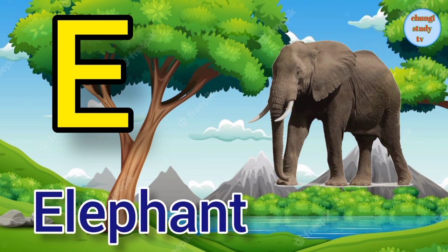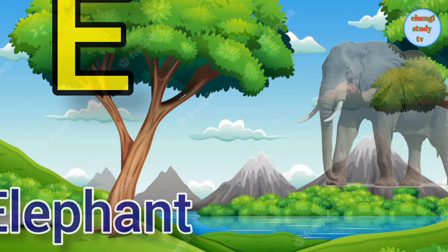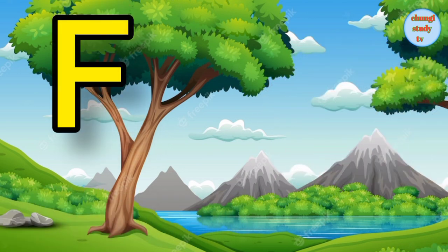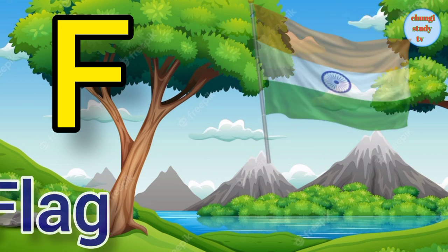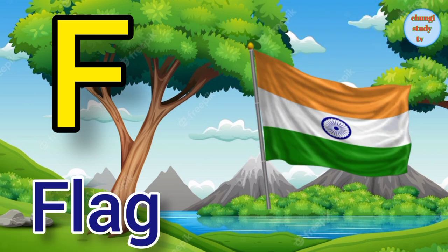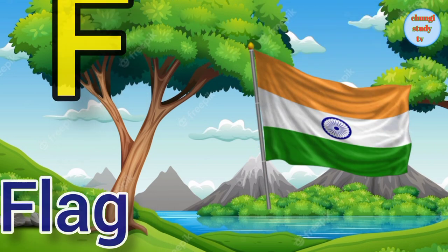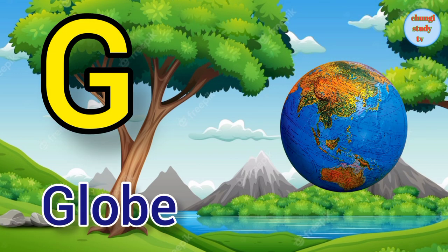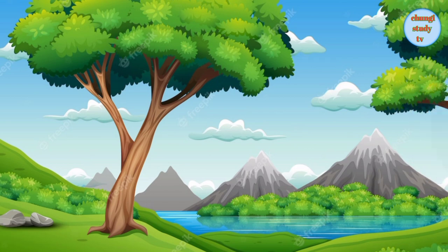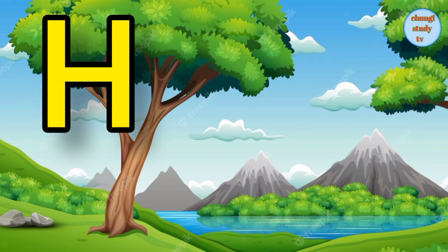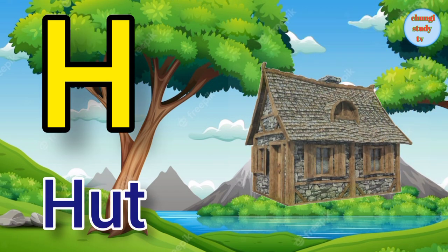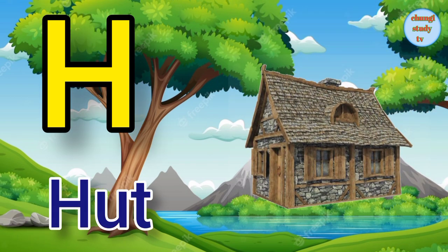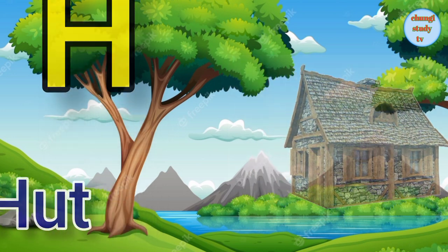E. E for elephant, elephant means hathi. F. F for flag, flag means jhanda. G. G for globe, globe means manchit. H. H for heart, heart means jhopdi.